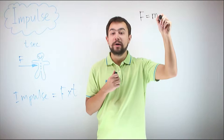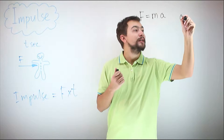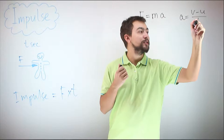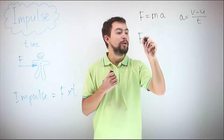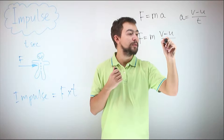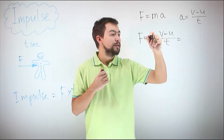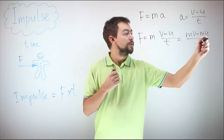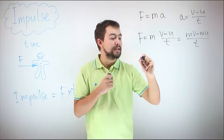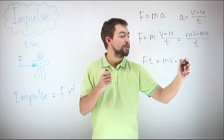According to Newton's second law, force is equal to mass multiplied by acceleration. We also know that acceleration is equal to final velocity minus initial velocity divided by time. So if we plug in A, we get force equals mass multiplied by V minus U divided by T, so multiplying out: Mv minus Mu divided by T. Now, if we multiply both sides by T, we get Ft is equal to Mv minus Mu.